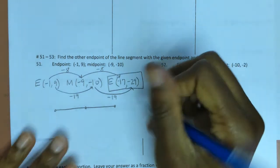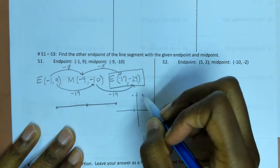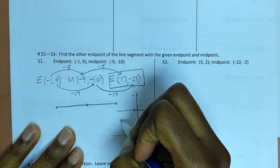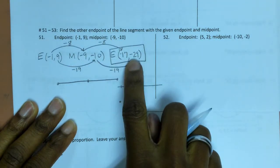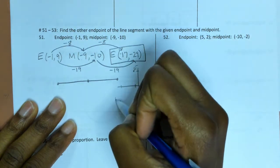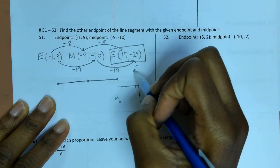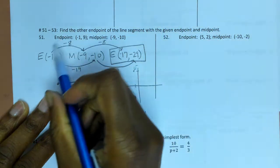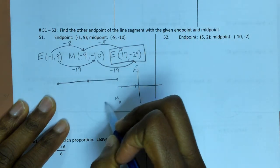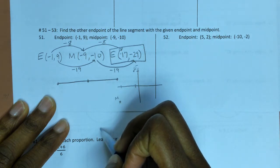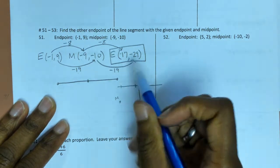If you graph this, it's easier to visualize. Endpoint (−1, 9) is up here and midpoint (−9, −10) is down here. What we're doing is figuring out from the end to the middle how much it went left and down — 8 units left and 19 units down. Then we repeat that from M: go 8 units left and 19 units down from M, landing at approximately (−17, −29). That's a good ballpark for our answer.